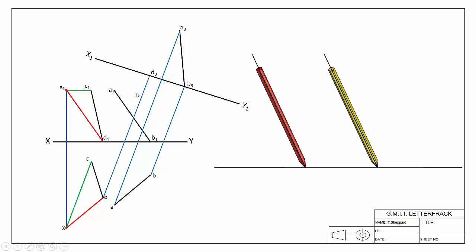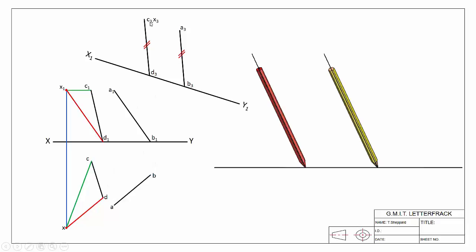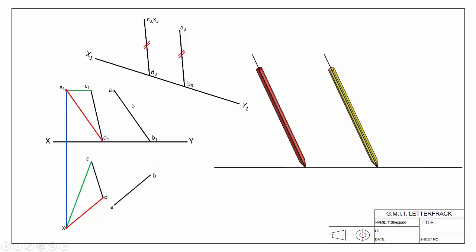We do the same with D — D is on the ground, so D is on the ground here. X and C are transferred along; they share the same height, so they appear here as a point view. There's skew line CD, and you can see the two are parallel — proof that we've found the edge view of the plane containing both lines.